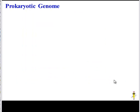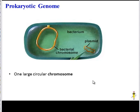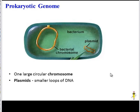Let's start by reviewing the genome of prokaryotic cells. Here we have a bacterial cell. Most of the bacteria's genes are found on one circular chromosome. However, bacteria also have smaller loops of DNA known as plasmids. And on both the chromosome and the plasmids, the genes are organized into little clusters called operons.